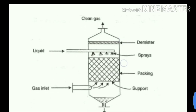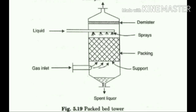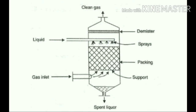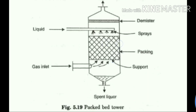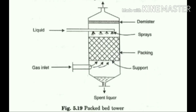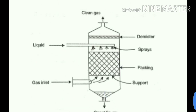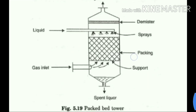In the counter-current type, gas enters from the bottom section and moves in the upward direction. Nozzles in the top section spray water downward while the gas moves upward. Packing materials are provided to increase contact. The gas contacts the water droplets, the polluted water is collected at the bottom, and the clean gas exits from the top.